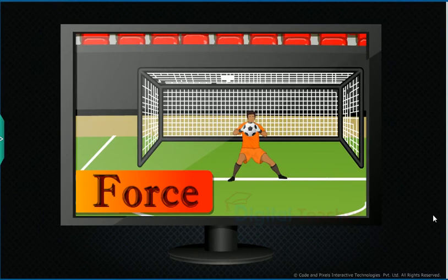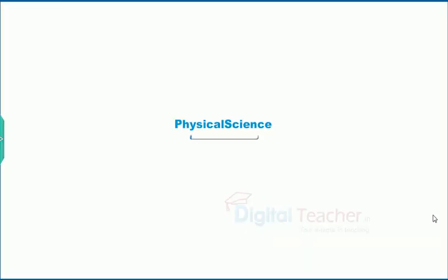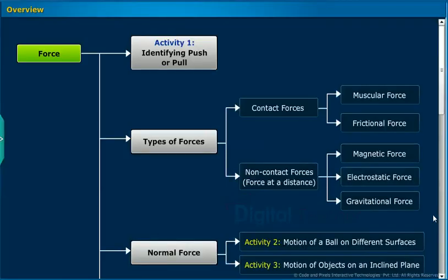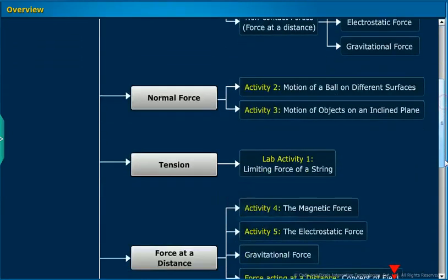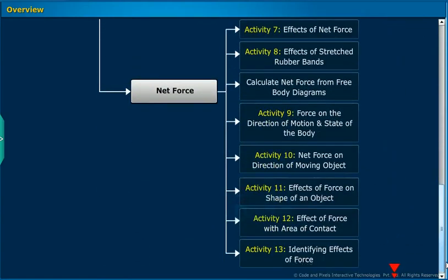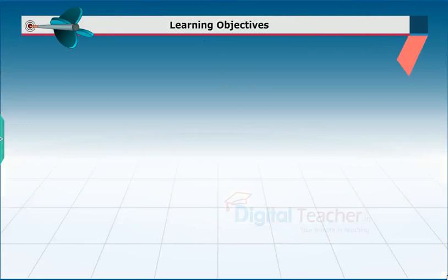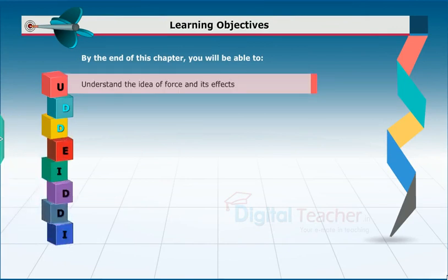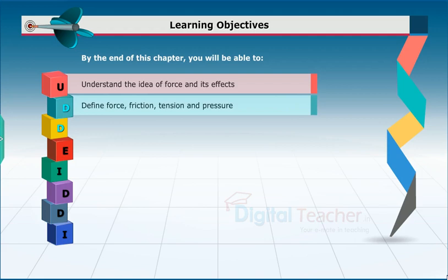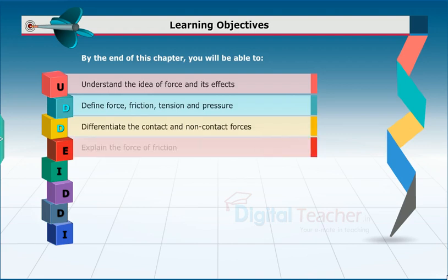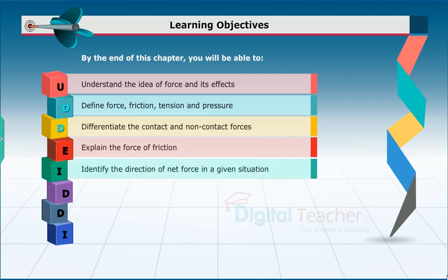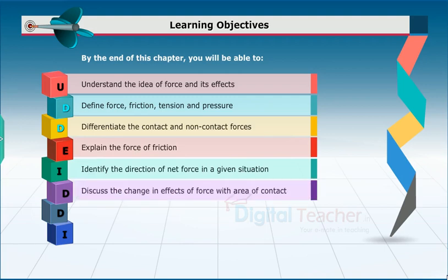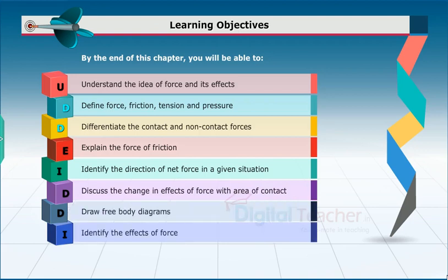Welcome to Chapter 4. This slide presents the overview of the chapter. By the end of this chapter, you will be able to: understand the idea of force and its effects; define force, friction, tension and pressure; differentiate contact and non-contact forces; explain the force of friction; identify the direction of net force in a given situation; discuss the change in effects of force with area of contact; draw free body diagrams; and identify the effects of force.